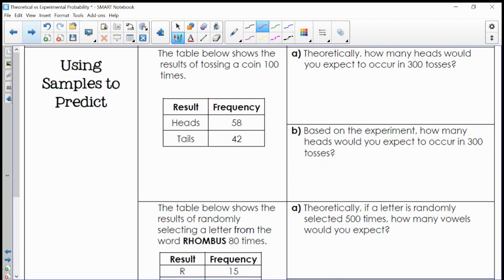We can also use theoretical probability and experimental probability to make predictions on an event. Take this first example. The table below shows the results of tossing a coin a hundred times.